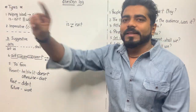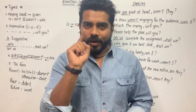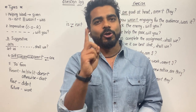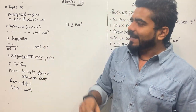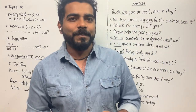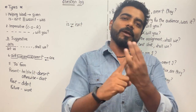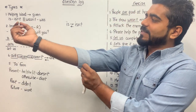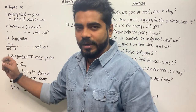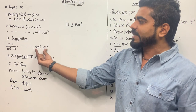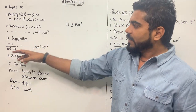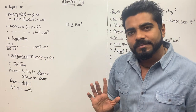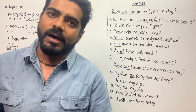Quick recap: Type 1 — helping word is given, add or remove 'not'. Type 2 — imperative sentence (command, order, request), answer is always 'will you'. Type 3 — suggestive sentence beginning with 'let's' or 'let us', answer is always 'shall we'. Type 4 — exception helping words: ain't → am; am → aren't; aren't → are; are → aren't. I hope it is crystal clear until now.